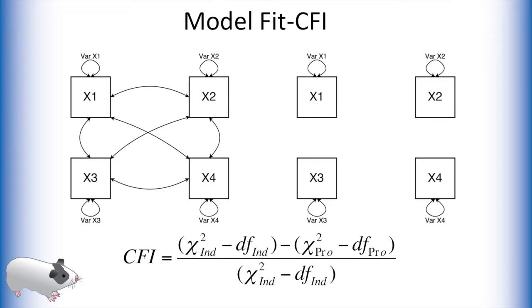The first of these fit indices OpenMx provides is the CFI. CFI has two components to its calculations. The first component, which appears in the numerator and denominator of this equation, is derived from a chi-square test between the independence model and the saturated model.